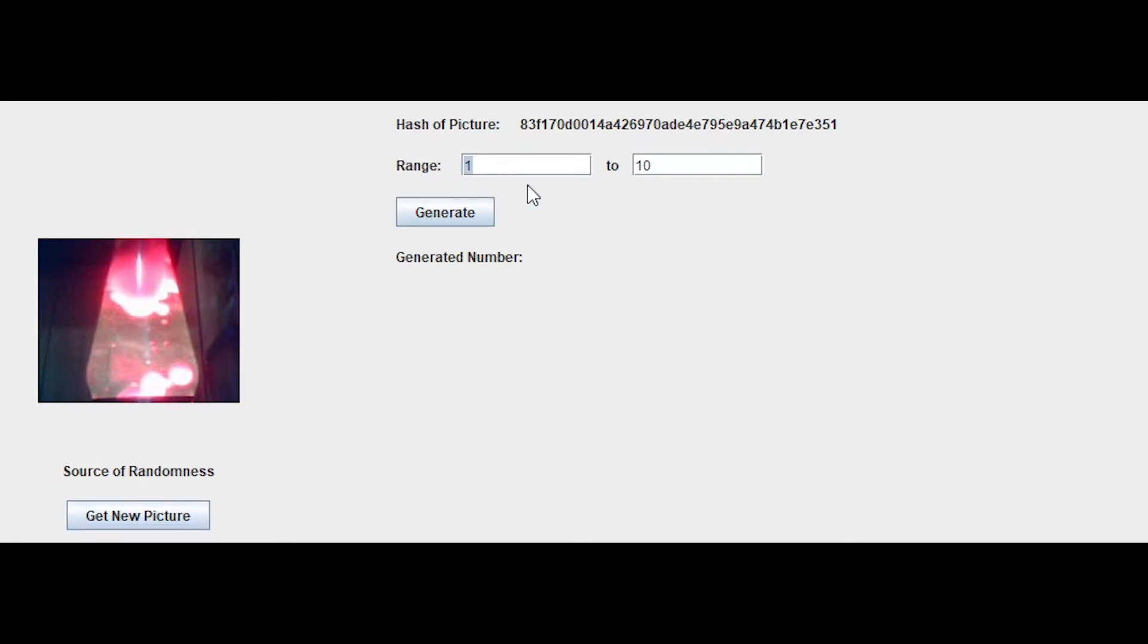You can set your range here. It defaults to 1 to 10. You can update this to, you know, 100,000, a million, whatever you want. Although it is susceptible to integer overflow, I just didn't think that anybody needed to generate a number greater than 3 billion. So whatever.